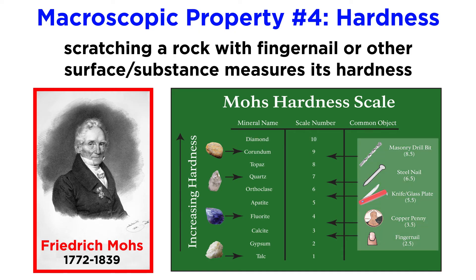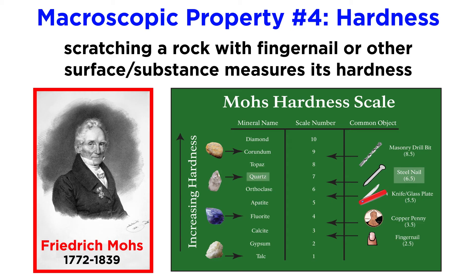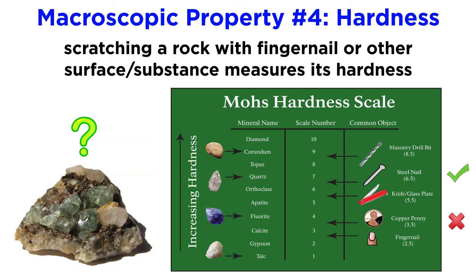Geologists also use common objects like coins or a metal fingernail file to approximate the hardness of minerals. Pennies have a hardness of about 3.5 on the Mohs scale, similar to fluorite, and metal files have a hardness of 6.5 on the Mohs scale, similar to quartz. For example, say you have an unknown mineral that can be scratched by a steel file but not by a penny — this would indicate that your mineral has a hardness between 3.5 and 6.5.